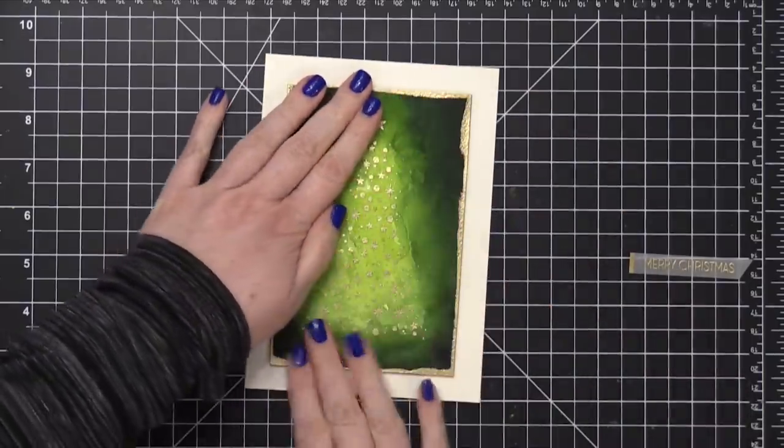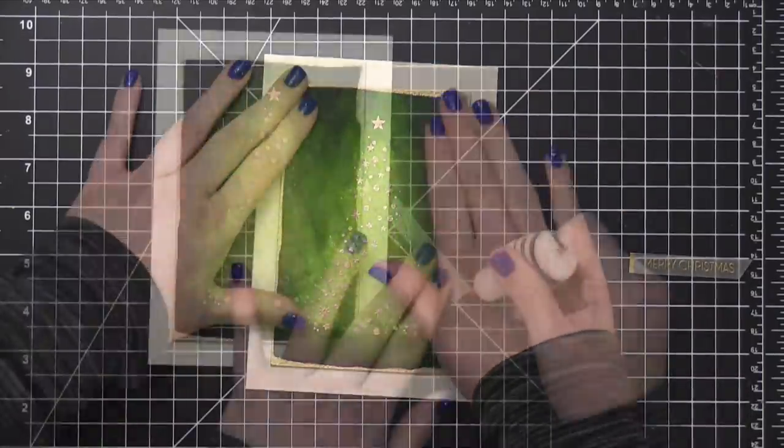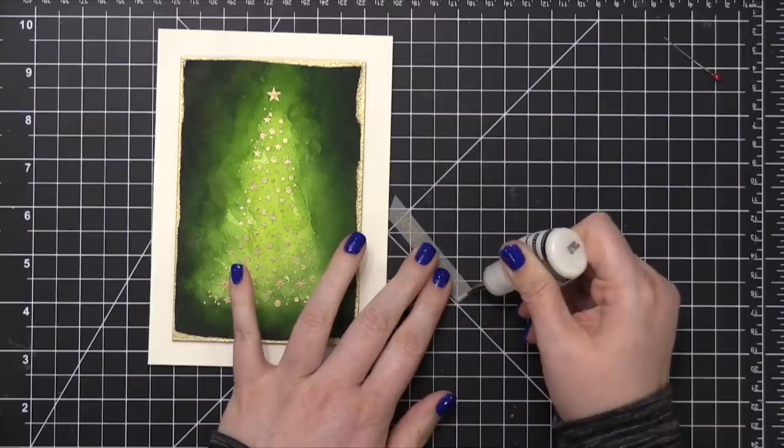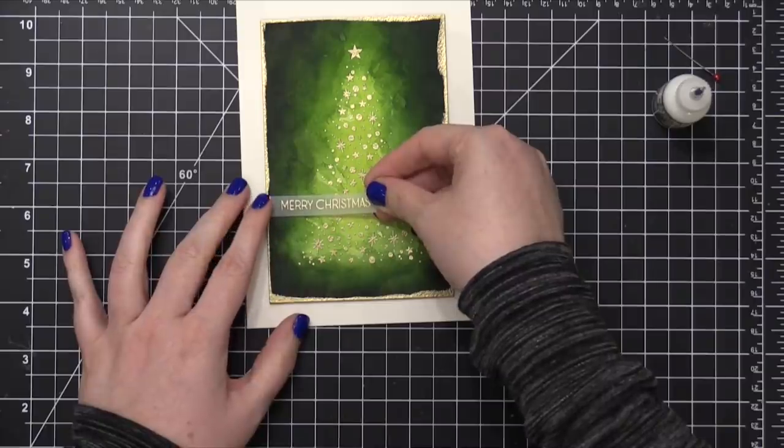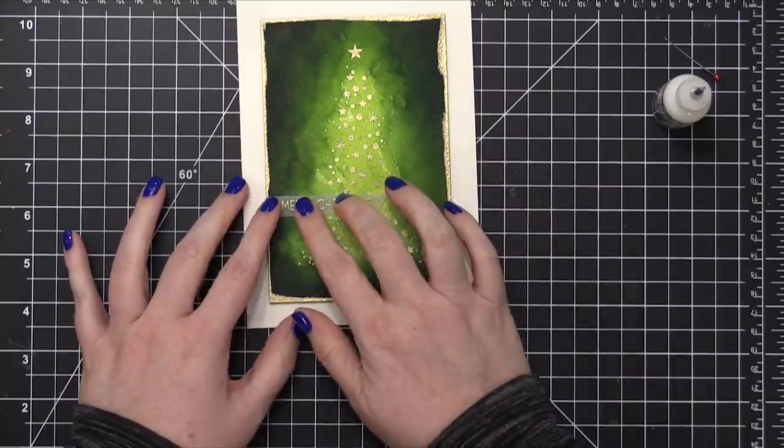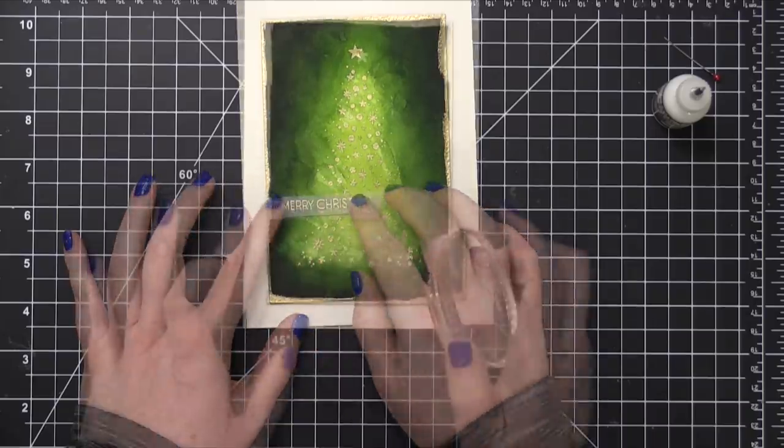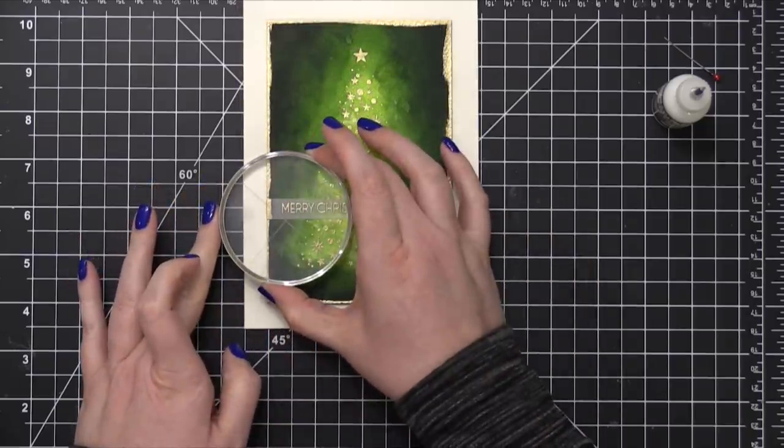The last thing to do is to adhere that little sentiment strip. I'm going to take some Ranger Multi Medium Matte Adhesive and put a tiny bit of adhesive just behind that gold embossing on the left edge. I'll get that in place and then I'm going to put an acrylic block over the top and that's going to hold it down while it dries.